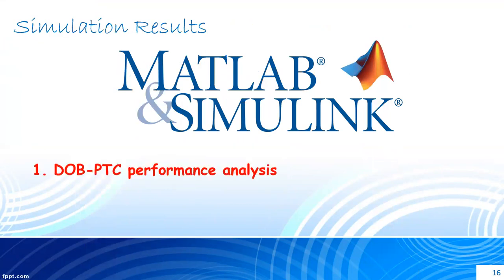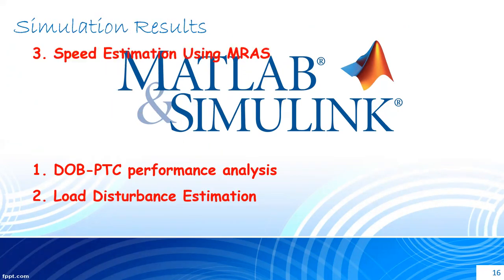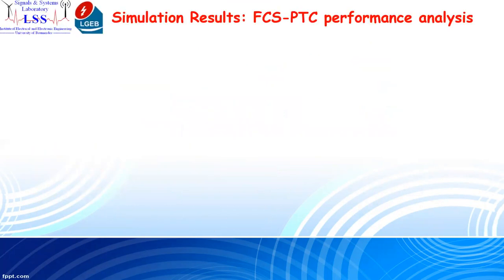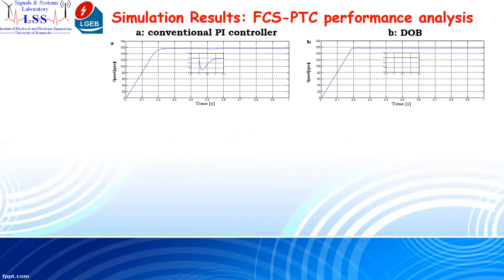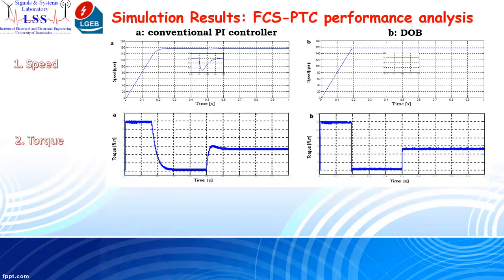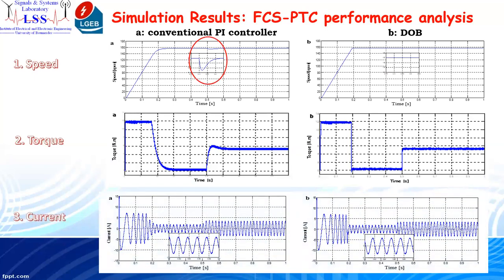The simulation results are divided into three phases. The first phase is a comparative study between predictive torque control based on a conventional PI controller for the speed loop versus predictive control based on the disturbance observer. The figures show rotor speed, electromagnetic torque, and stator current. We can notice that with the disturbance observer, the speed drop due to the application of 5 Nm of load has been compensated.